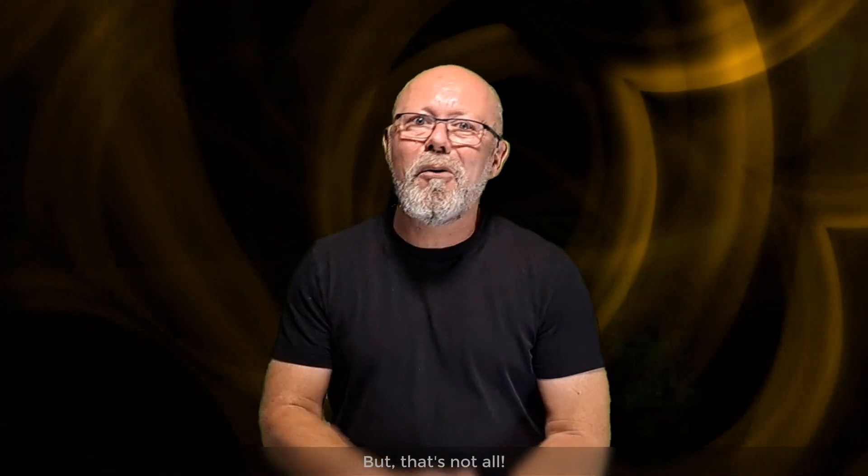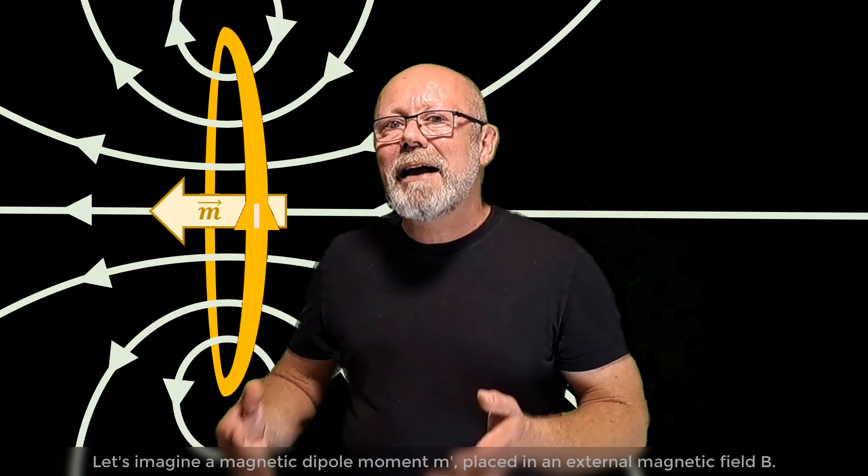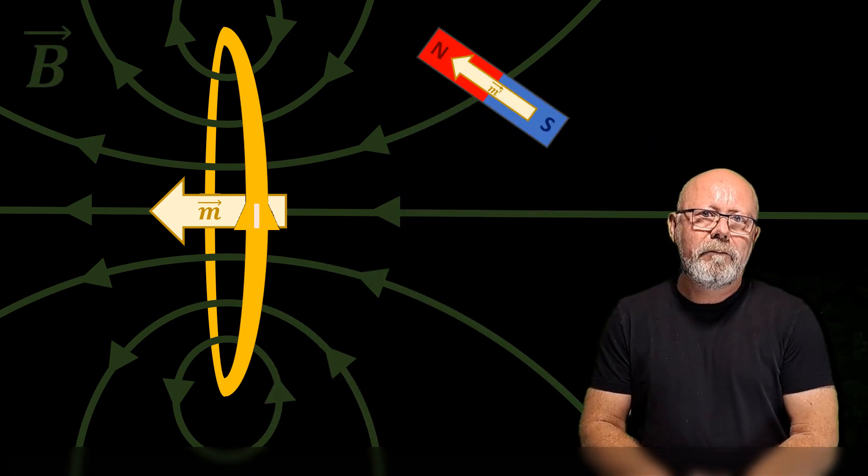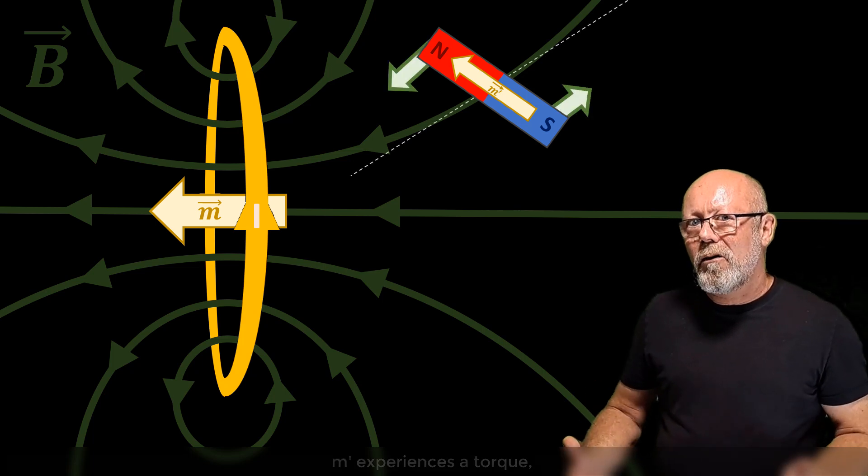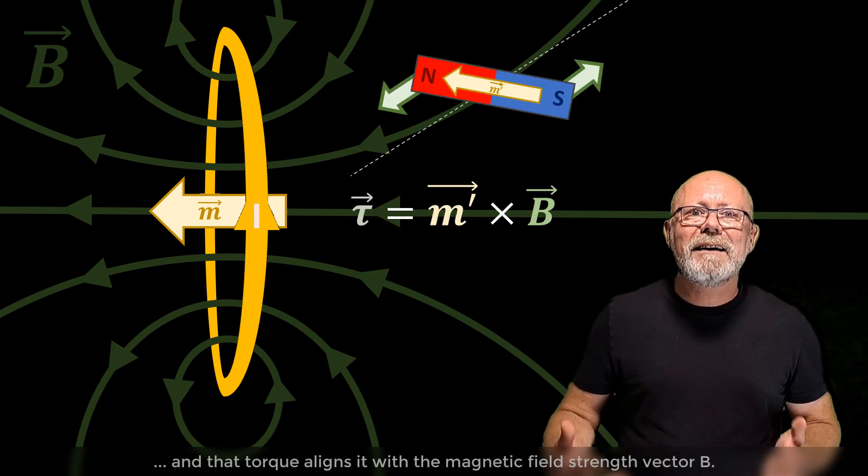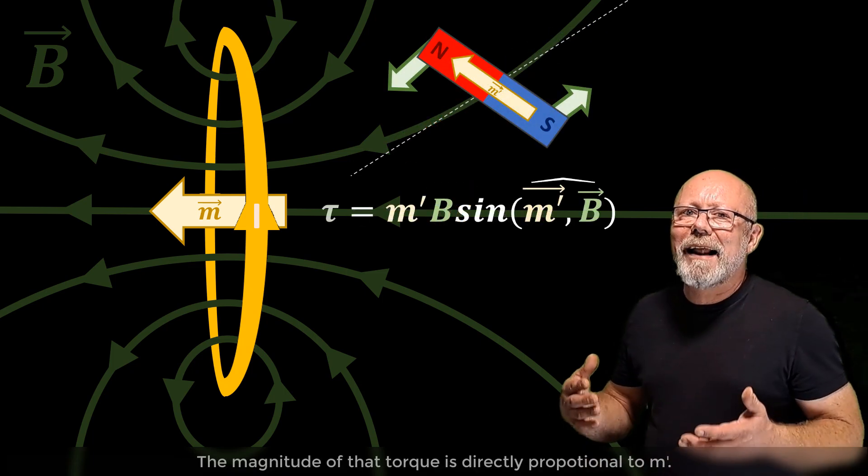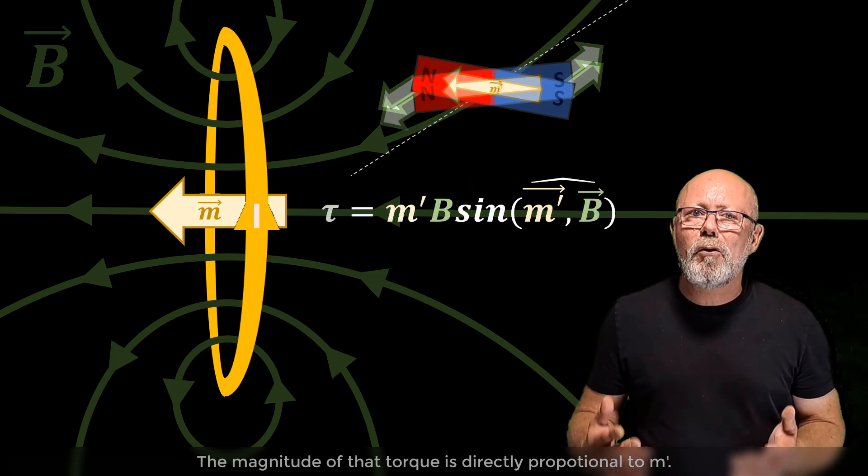But that's not all. Let's imagine a magnetic dipole moment m prime placed in an external magnetic field b. m prime experiences a torque, and that torque aligns it with the magnetic field strength vector b. The magnitude of that torque is directly proportional to m prime.